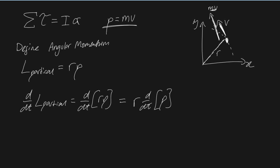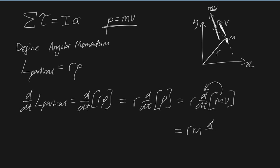What's the derivative of our momentum? Well, we know that momentum is just mv. Under the assumption that the mass of our particle doesn't change — so this is our mass of our particle — under the assumption that it's constant, that means we can factorize that out, meaning that we're left with r times m times d/dt of v.